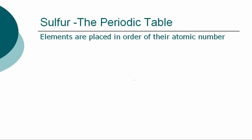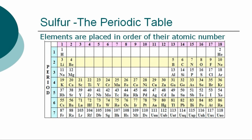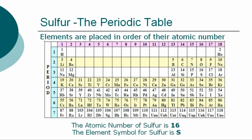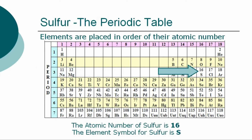The periodic table is a chart showing the symbols and the atomic numbers of all known elements, such as sulfur, in one large grid. The chemical elements of the periodic table are placed in order of their atomic numbers. Atomic numbers increase as you move across a row, called a group, or down a column, called a period. The atomic number of sulfur is 16 and the element symbol for sulfur is S.